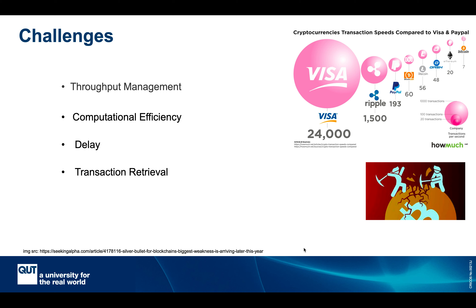In IoT you might need to frequently retrieve past transactions for verification or other use cases, more frequently than in cryptocurrencies. It is important to consider the computational overheads and delays associated with retrieving transactions, as well as the resources demanded by the consensus algorithm. In this talk, by blockchain we mean the public blockchain, although the consensus algorithm will be applicable in both public and private settings.